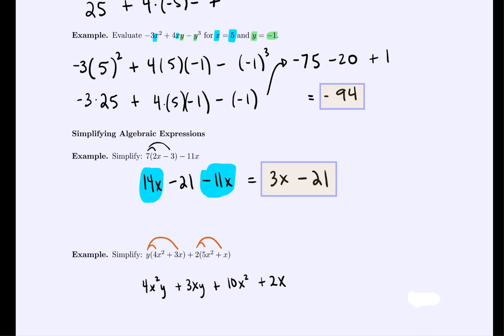And we'd ask ourselves, do any of these have anything in common? No, they're all measuring different things. This is an x squared y. Whereas this is just an xy. This is an x squared. This is just an x. So these can't combine any further. So we're done simplifying this expression.